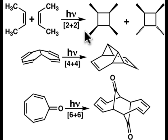The three reactions shown here—the 2 plus 2, the 4 plus 4, and the 6 plus 6—are thermally forbidden but photochemically allowed cycloaddition reactions.